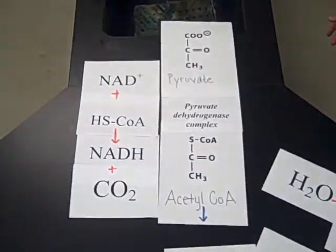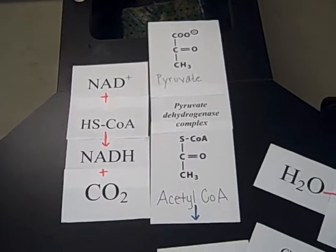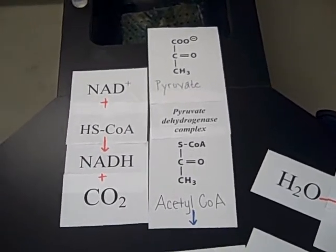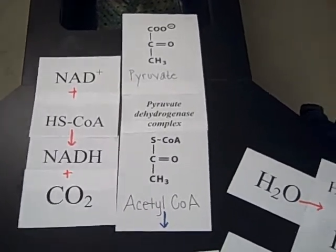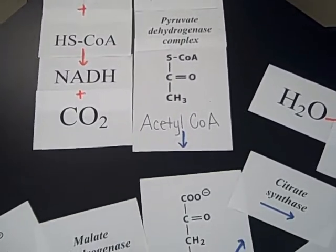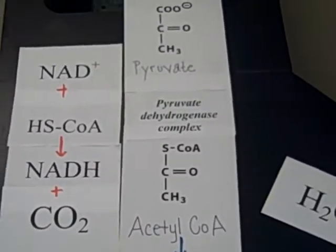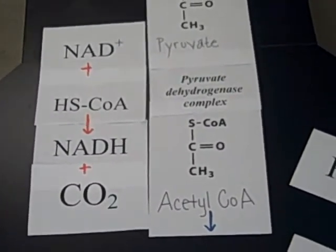After glycolysis finishes, it creates two pyruvates. In order to begin the citric acid cycle, these have to be converted to acetyl-CoA. This is done by the enzyme pyruvate dehydrogenase. This reaction produces one NADH and one CO2.